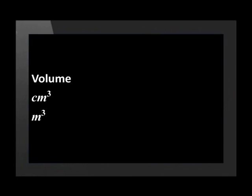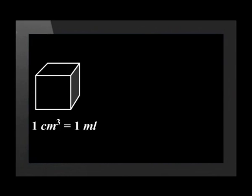Volume is measured in litres as well as cubic centimetres and cubic metres. Here is a small cubic block with each side measuring one centimetre. This block has a volume of one cubic centimetre, which is the same as one millilitre.